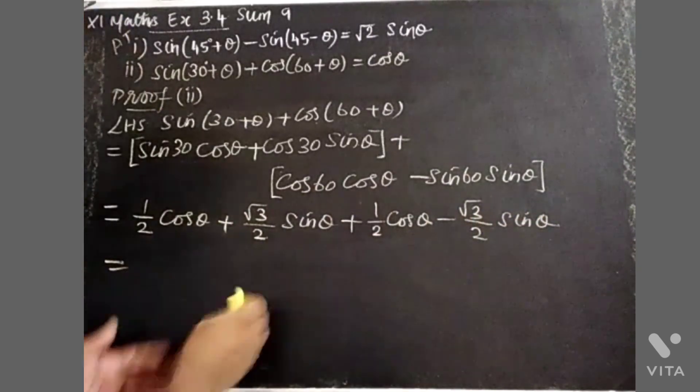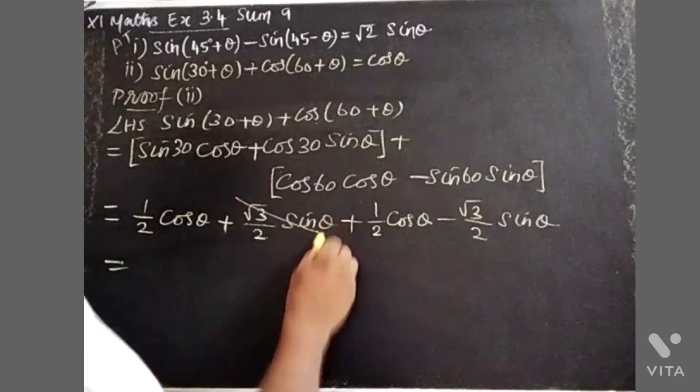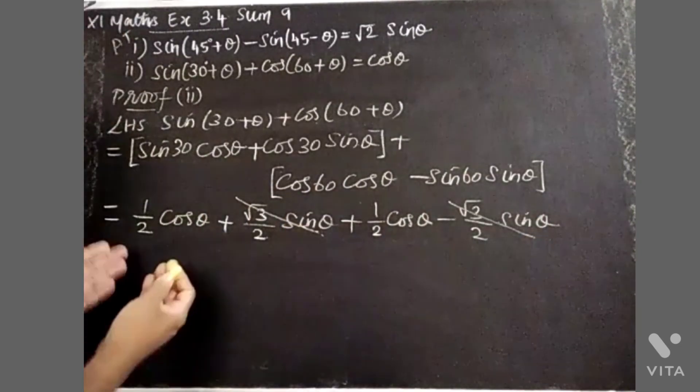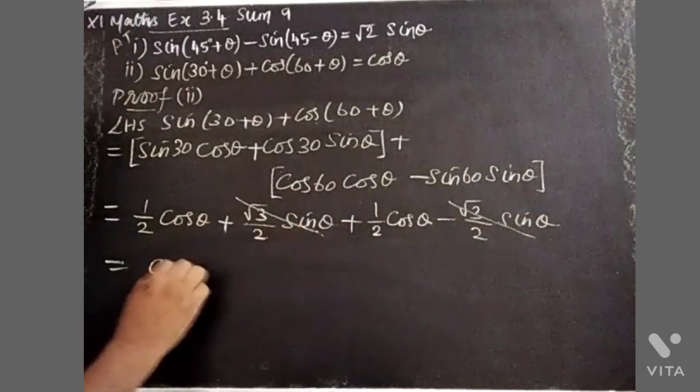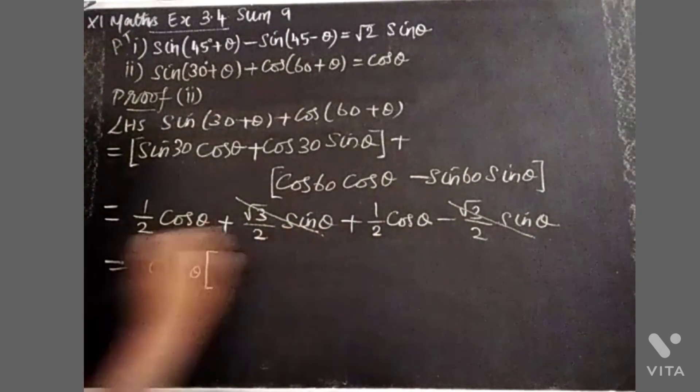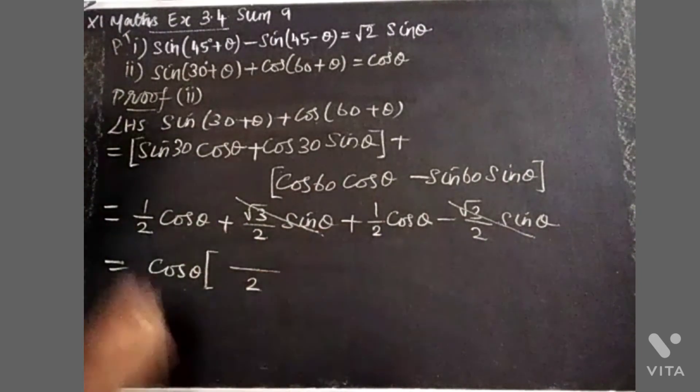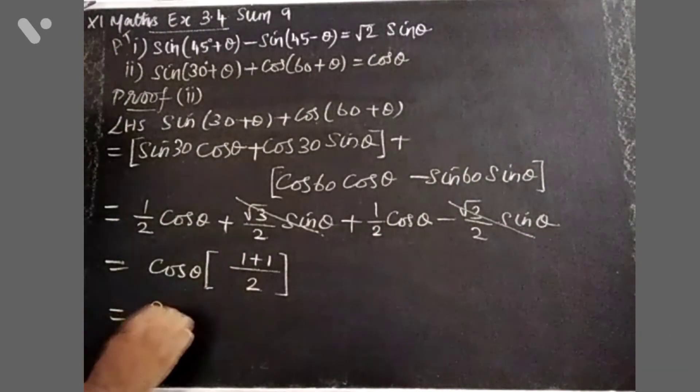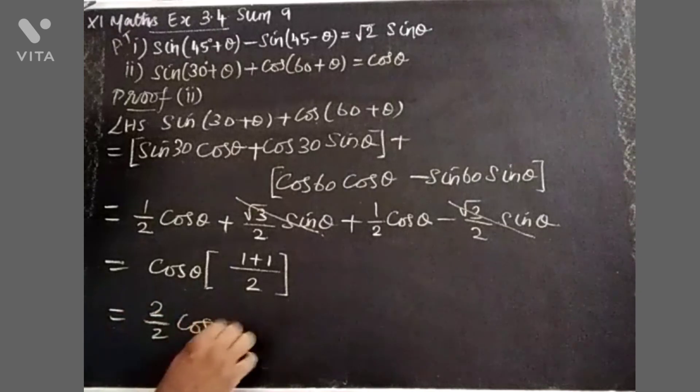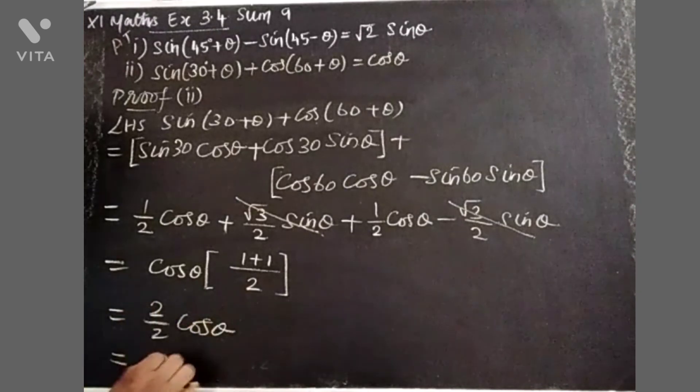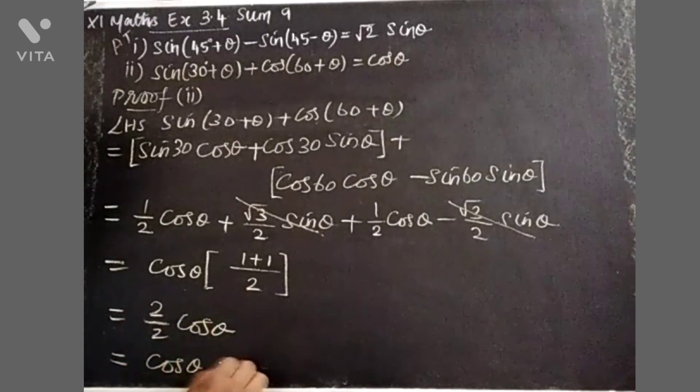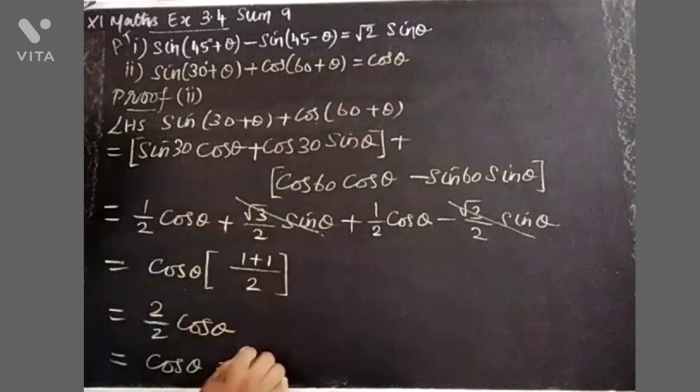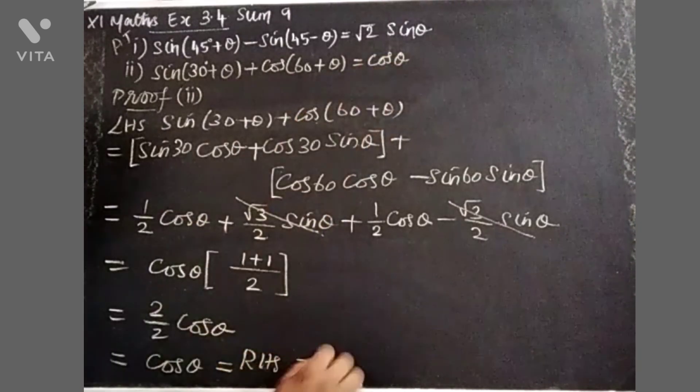After canceling the cos θ terms, we get 2/√2 sin θ. Simplifying: 2 divided by √2 equals √2, so 2/√2 sin θ = √2 sin θ, which is equal to RHS. This is equal to the proof.